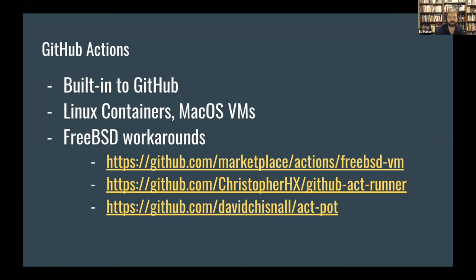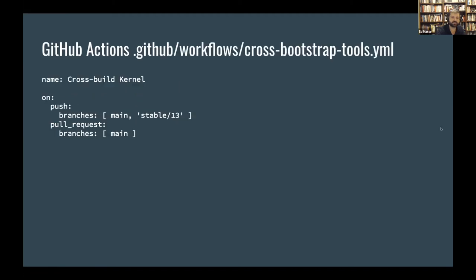That's my quick overview of the Cirrus CI integration in FreeBSD. GitHub Actions works basically the same way. As mentioned earlier, GitHub Actions is focused on containers and macOS VMs—at least in the FreeBSD context. There is no direct FreeBSD support in GitHub Actions directly, and there's some work-in-progress and various hacks to try to get there. For what we really care about, the cross-build support via GitHub Actions is just fine. It's the same approach—metadata within the repository itself.